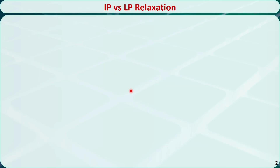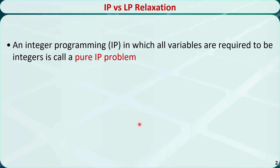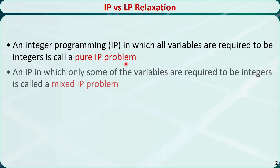An integer programming problem is an optimization problem with integer decision variables. If all the decision variables are required to be integers, then this problem is called a pure integer programming problem. If only some of the decision variables are required to be integers, then this problem is called a mixed integer programming problem.